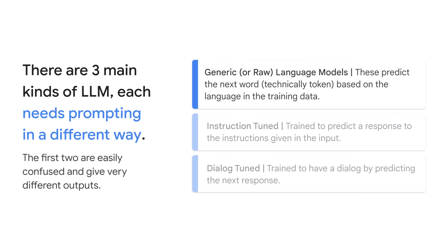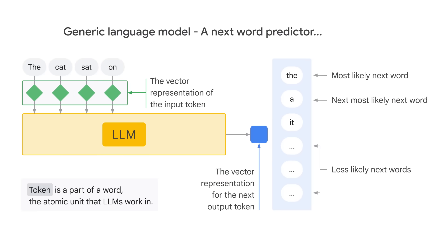There are three kinds of large language models: generic language models, instruction-tuned, and dialogue-tuned. Each needs prompting in a different way. Generic language models predict the next word based on the language in the training data. The next word is a token based on the language in the training data. For example, given 'the cat sat on,' the next word should be 'the,' and you can see that 'the' is the most likely next word. Think of this type as autocomplete in search.